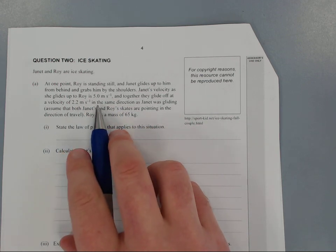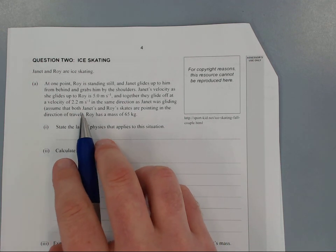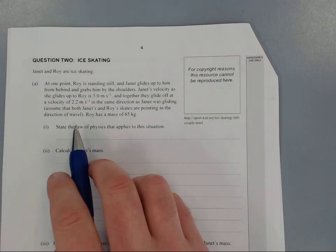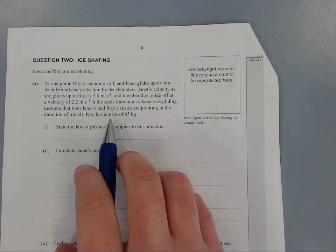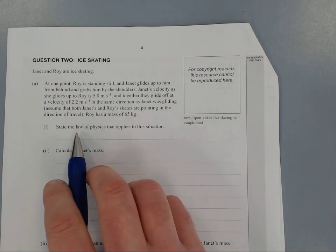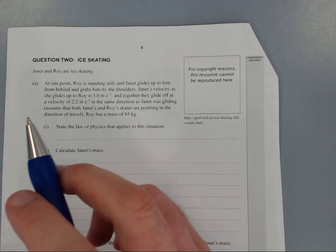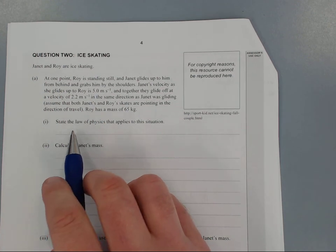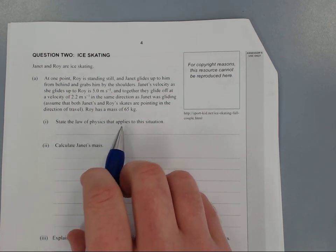They glide off together at a velocity of 2.2 meters per second in the same direction as Janet was going. Assume both Janet and Rory's skates are pointing in the direction of travel. Rory has a mass of 65 kg. Straight off the bat this is a momentum question.